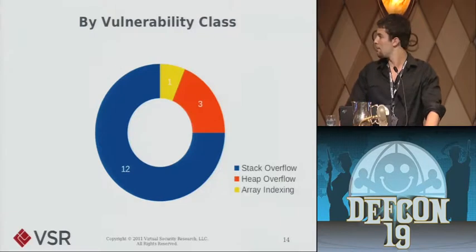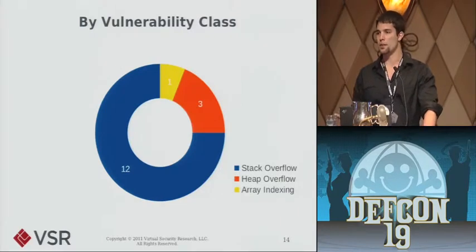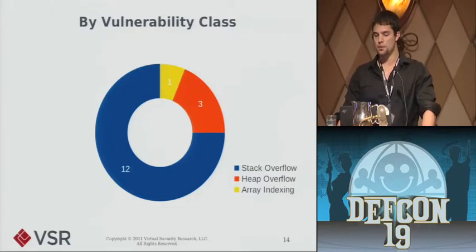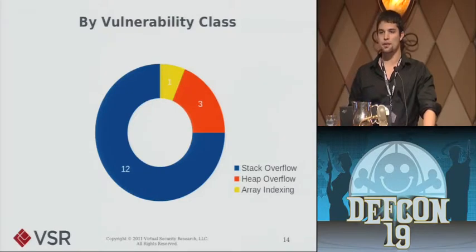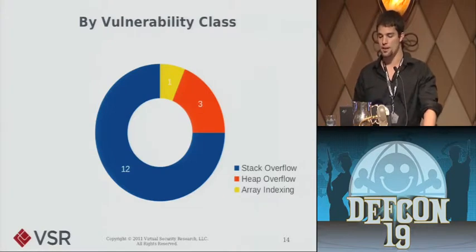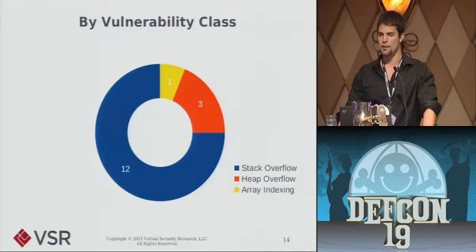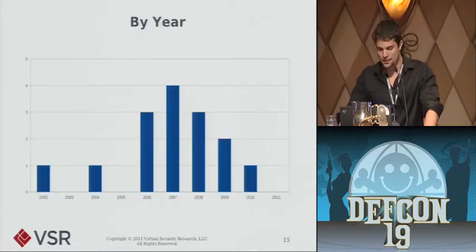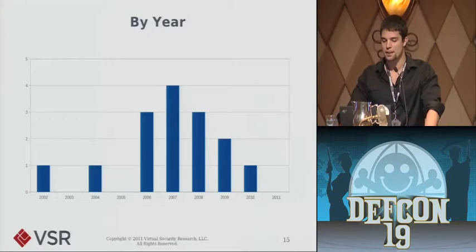Breaking these down by vulnerability class: a full three-quarters — 12 of the 16 — were typical stack overflows. This is probably because these vulnerabilities are incredibly conducive to exploitation; they're very well understood and the steps are known. Three were heap overflows, which are frequently much more difficult. And one Windows SMB issue was an array indexing issue. 2007 was a busy year for kernel exploitation.